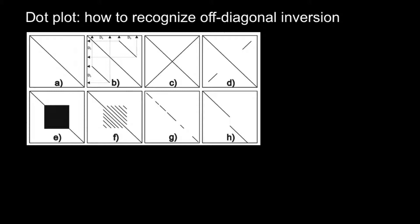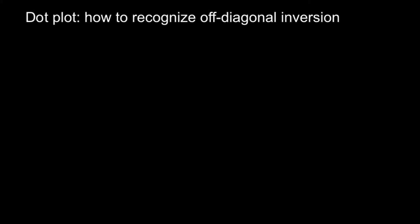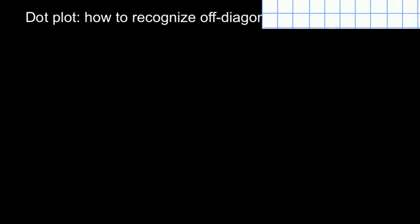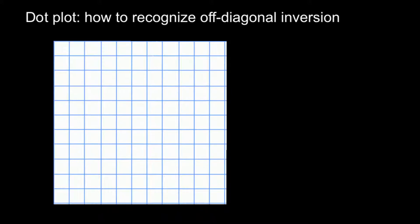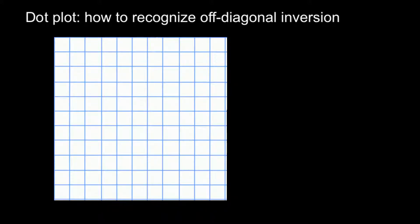Today I am proceeding to talk about inversions, because this is the biggest group of different patterns that we may see when we do a dot plot. In this video I am going to talk about how to recognize off-diagonal inversion, and this video is going to be a little bit unusual because today I'm going to test your knowledge.